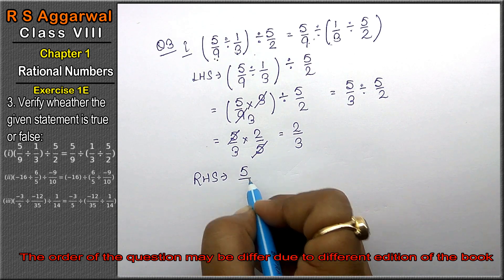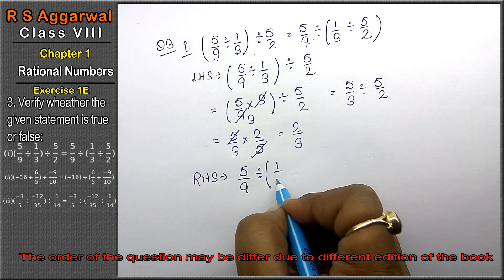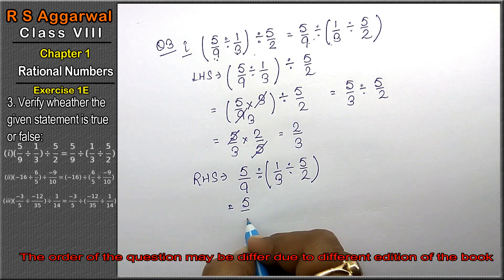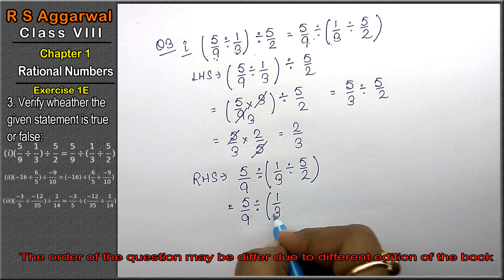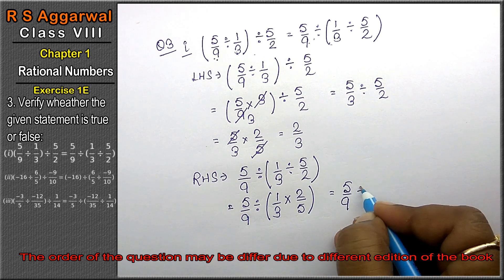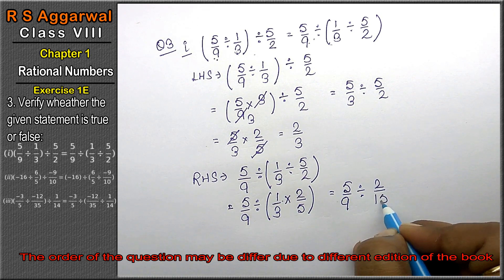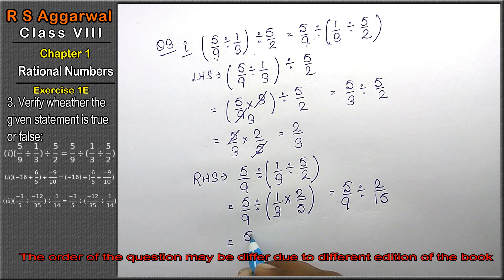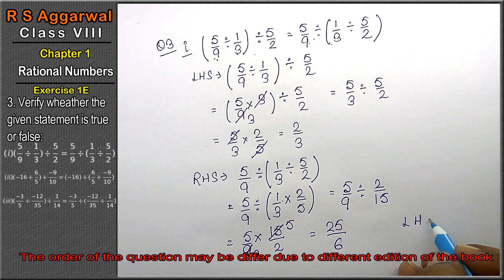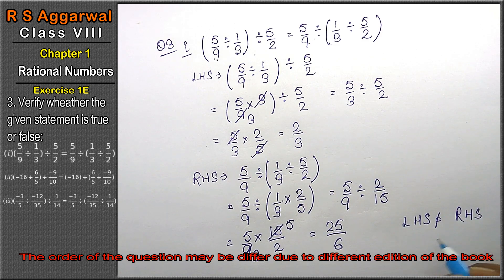Now let's see our right-hand side: 5/9 ÷ (1/3 ÷ 5/2). This becomes 5/9 ÷ (1/3 × 2/5), which gives 5/9 ÷ 2/15. Then 5/9 multiplied by 15/2 — since 3 fives are 15 and 3 threes are 9 — gives 25/6. That means left-hand side is not equal to right-hand side; hence, the statement is false.